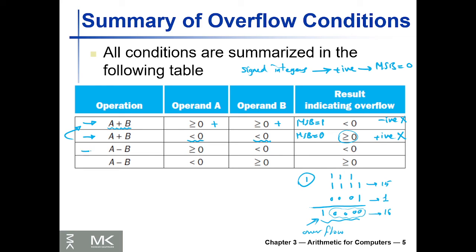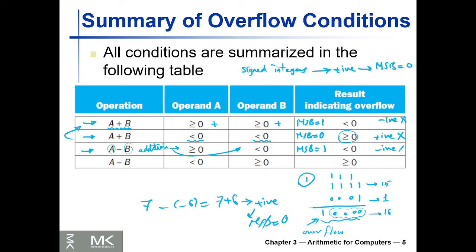For subtraction, recall it's equivalent to addition. For a minus b where a is positive and b is negative — for example, 7 minus (−6) is 7 plus 6 — the result should be positive, so the MSB should be 0. If you find the MSB equals 1, meaning the output appears negative, you know there has been an overflow.